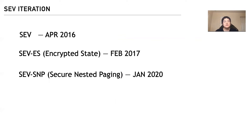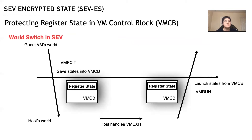Since SEV was first released in 2016, there have been some extensions. The second generation is called SEV Encrypted State, SEV-ES. SEV-ES aims at protecting register states in the VM Control Block, VMCB.